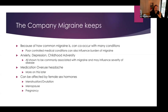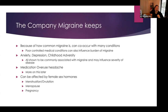Migraine is very common—depending on what study you read, it affects 12 to 15% of the entire population, more women than men, and about one in four households has at least one member with migraine in Canada. Because of this, so many other conditions can occur with migraine. The most common ones we see are anxiety, depression, and childhood adversity. While none of them are the cause of migraine, all of them can influence the severity of the disease. We also see medication overuse headache—which I'll talk about later—and migraine is affected by sex hormones, so menstruation, ovulation, menopause, and pregnancy can all impact how much migraine affects somebody.